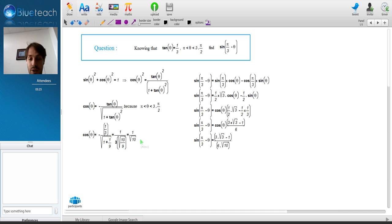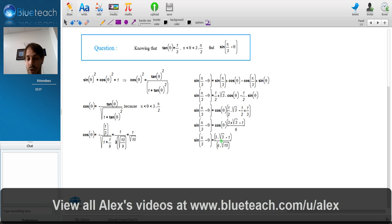We're almost there. We just replace cosine theta on the right by 1 divided by square root of 10, and we have the result. Sine pi divided by 3 minus theta equals 3 square root of 3 minus 1 divided by 6 square root of 10.